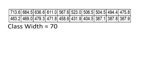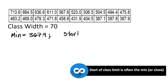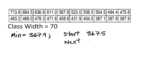Next, we need to figure out our class limits. We normally start with the minimum data value, which here is 367.9. We start with the minimum data point or something very close to that, so I'm going to make the starting point 367.5. The next value after that is 367.5 plus 70, so that's 437.5. The next is 507.5. These are all going to be my lower class limits.